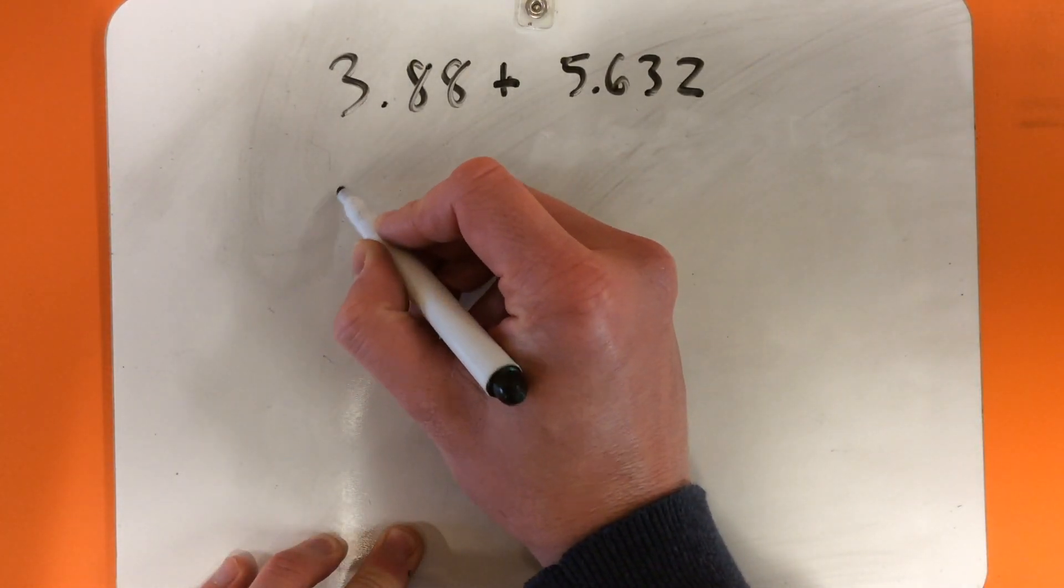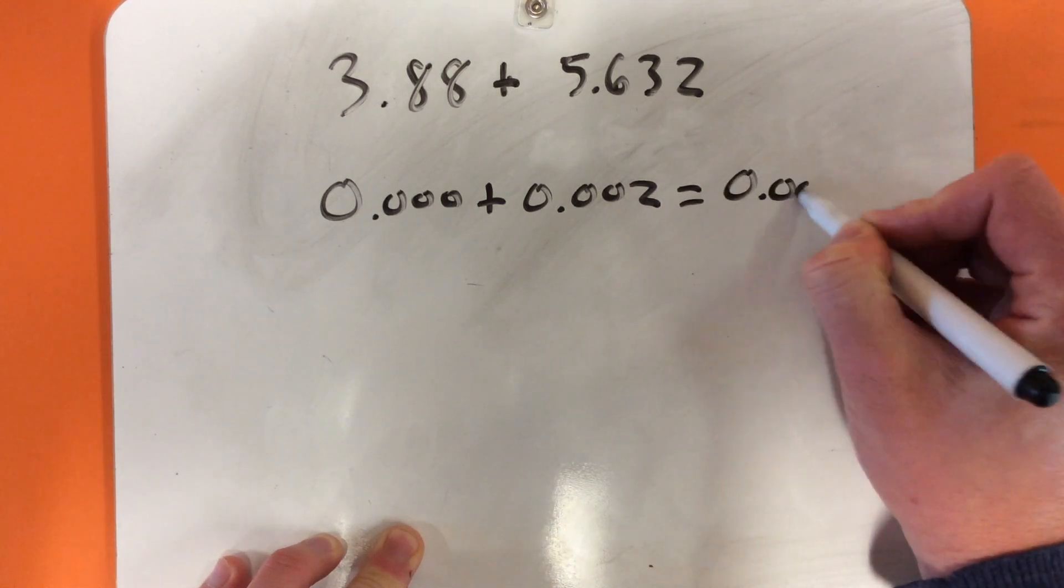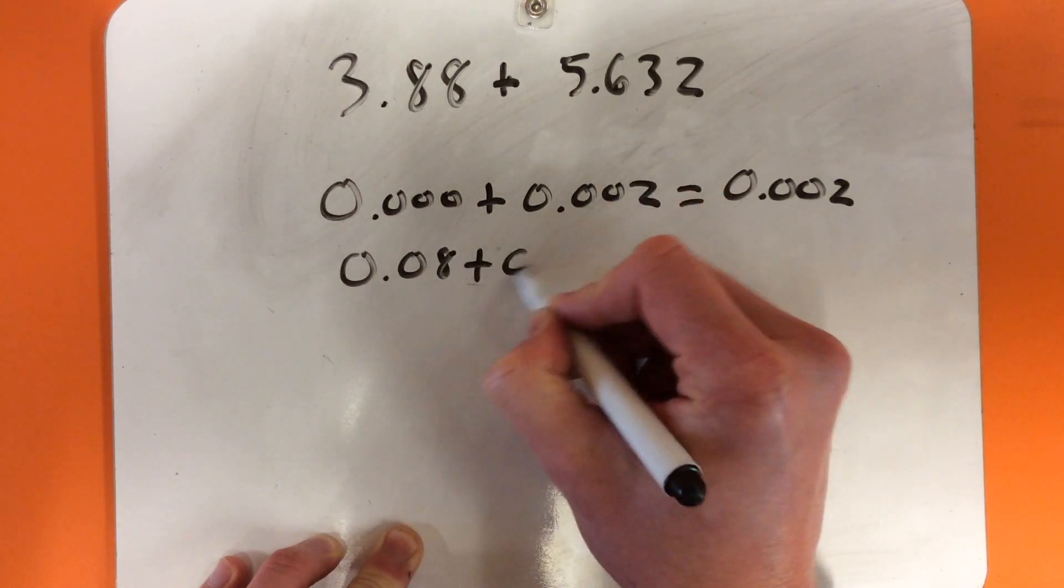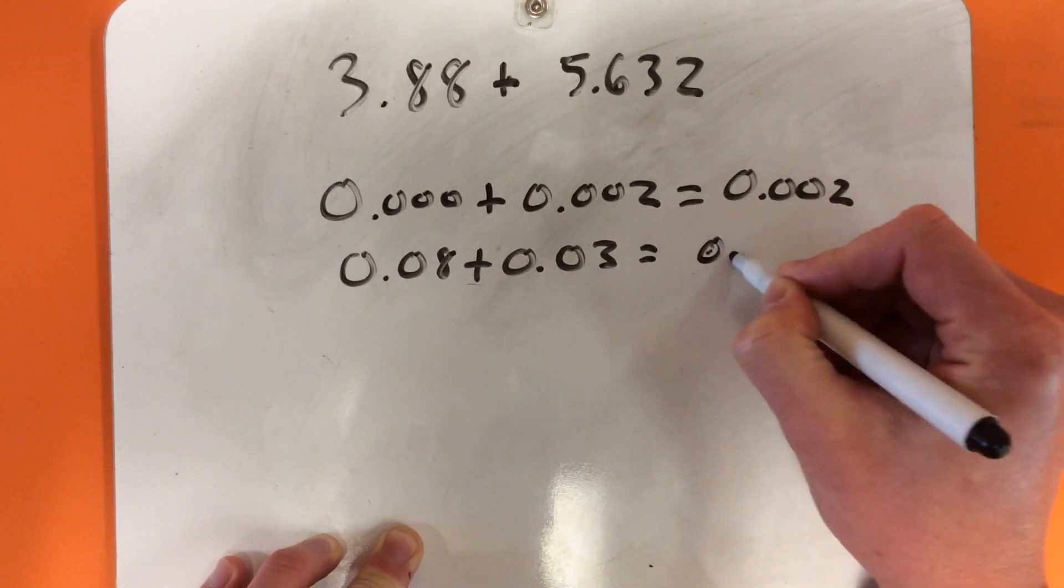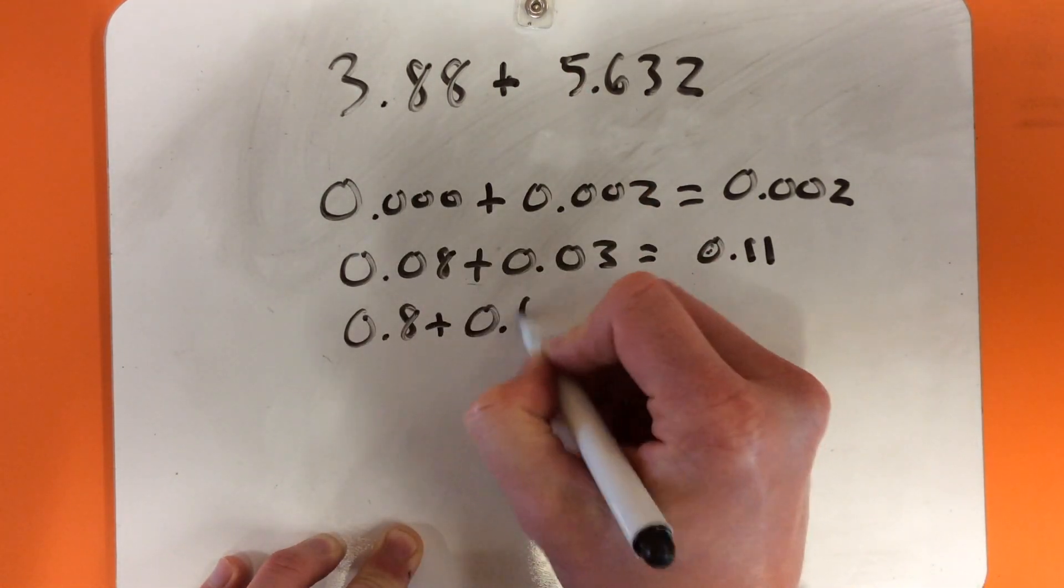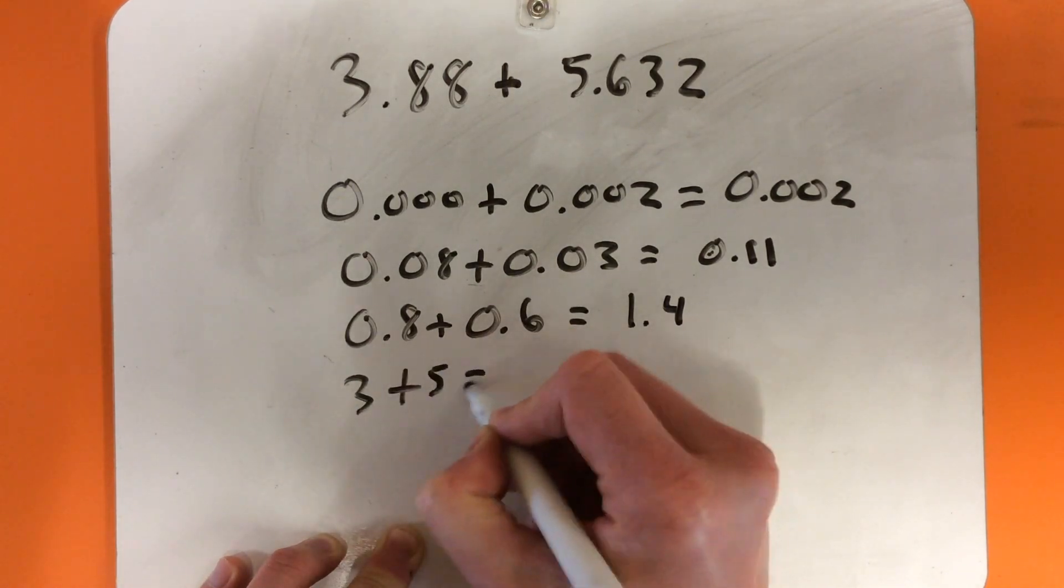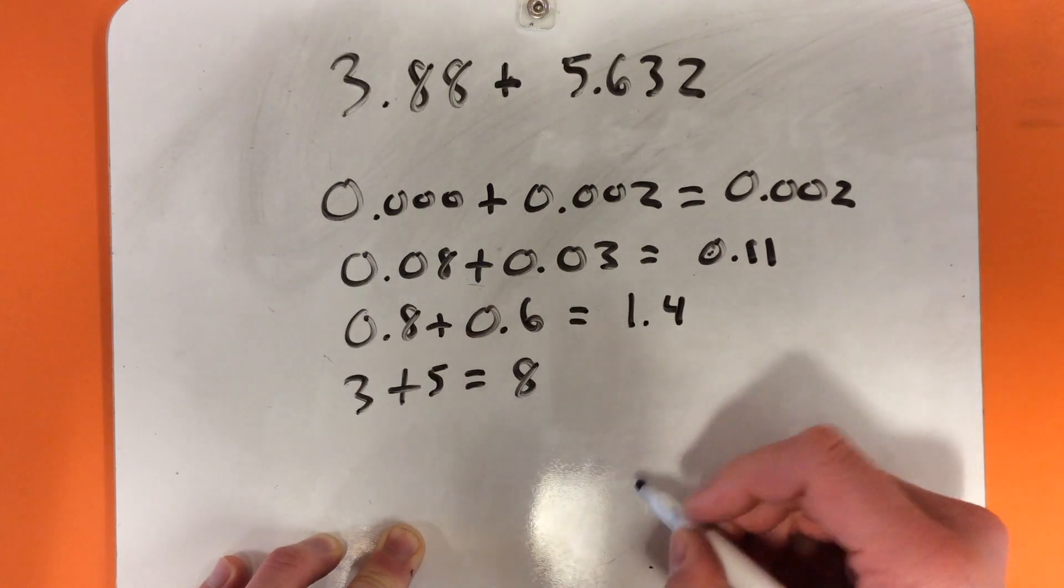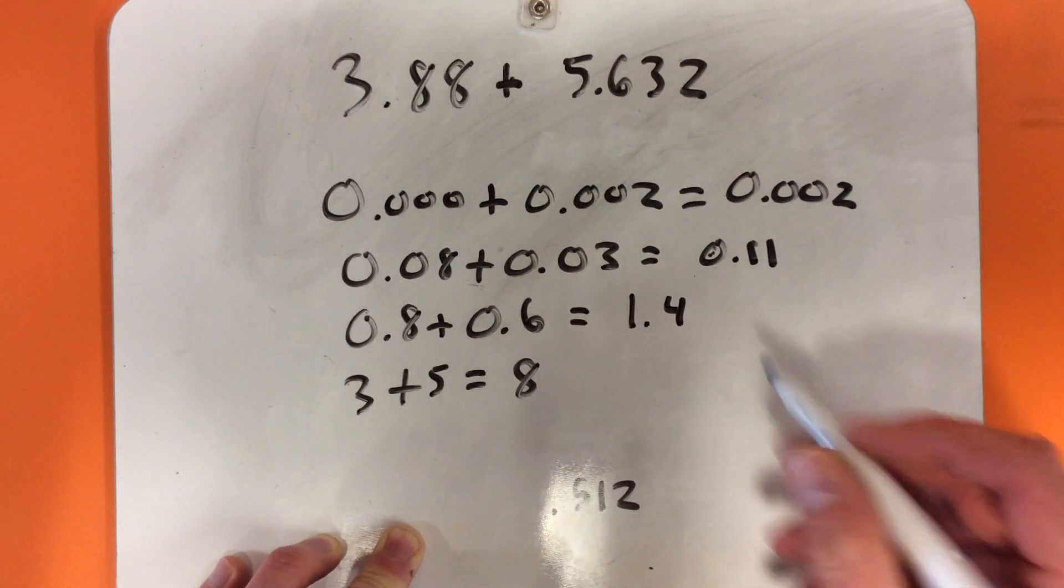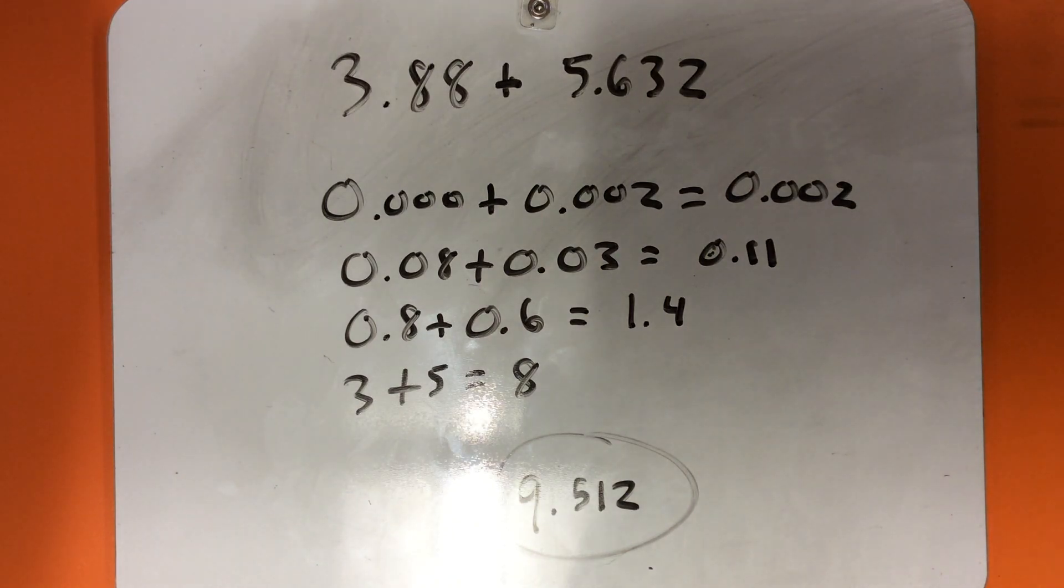So we're going to do 0.000 plus 0.002, and that equals 0.002. Then we take our 8 hundredths and our 3 hundredths, and that equals 11 hundredths, which is 0.11. Then we're going to take our 8 tenths plus 6 tenths, and that equals 14 tenths, so that is 1.4. Then we do 3 plus 5 equals 8. We're going to add these all together: 0.002, 0.11, 1.4, and 8, which gives us 9.512 or 9 and 512 thousandths.